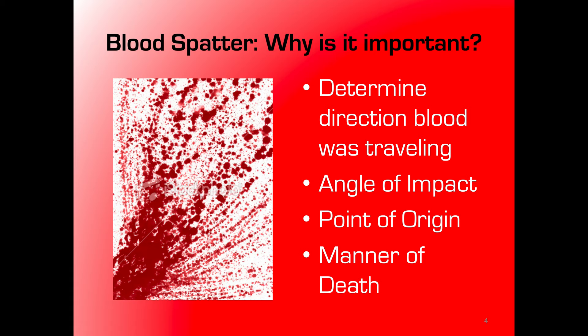Blood spatter is useful for an awful lot of things. It can give investigators a determination of the direction that blood was traveling, and an angle of impact. A lot of this gets used to either corroborate or refute somebody's statements or an eyewitness's observations. For example, if the angle of impact was low and somebody says they had to defend themselves while standing, that might not jive. The point of origin can be determined, and sometimes from certain blood spatter patterns you can determine the cause or manner of death.